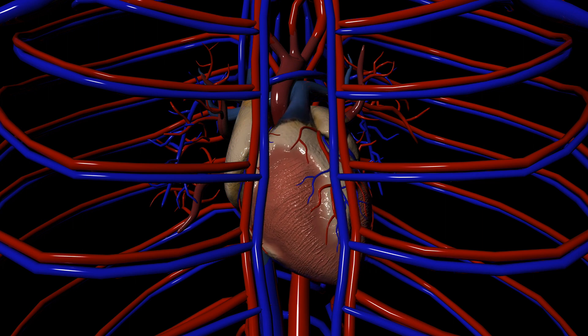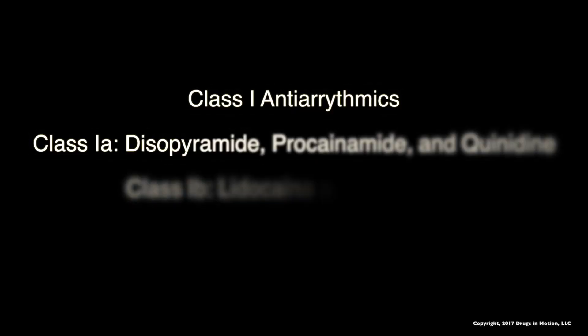On an EKG, this increases the QRS interval. When we slow depolarization and the initiation of the active charge, we can correct the irregular pace.